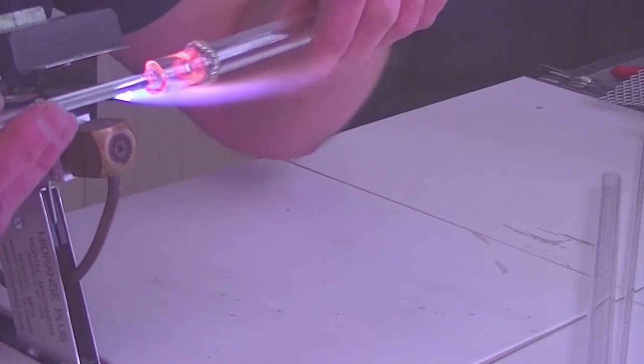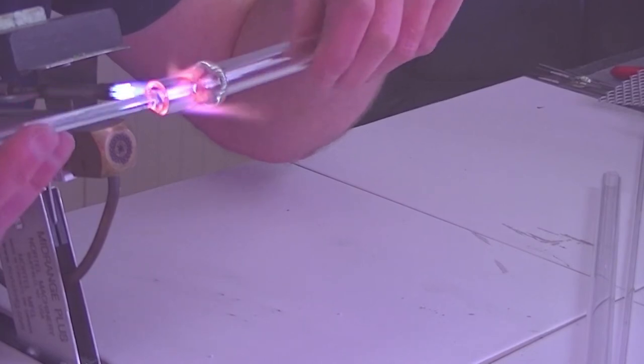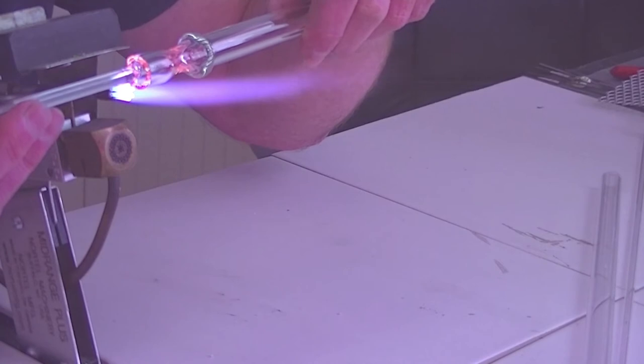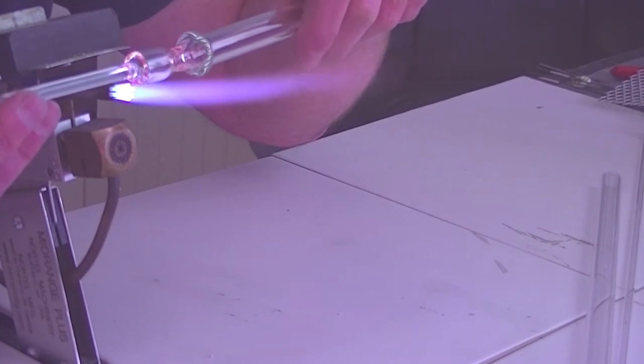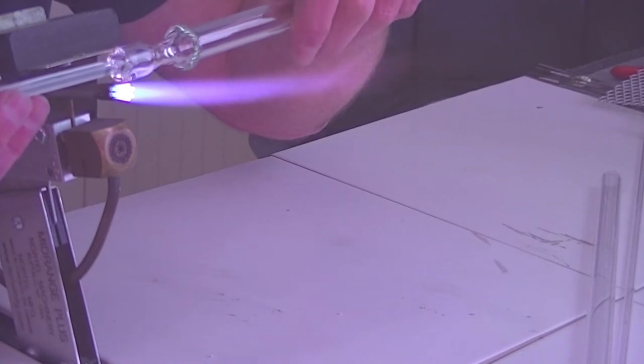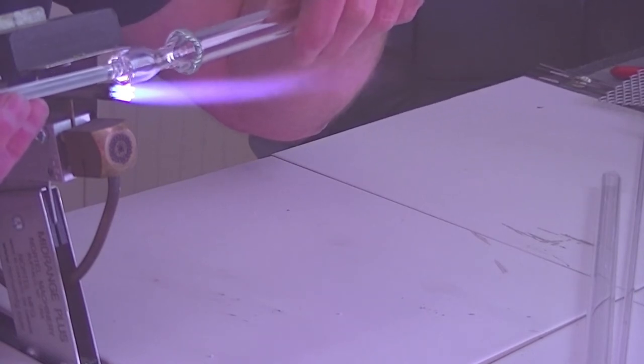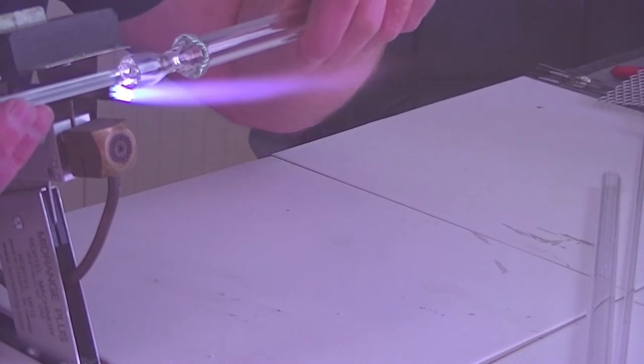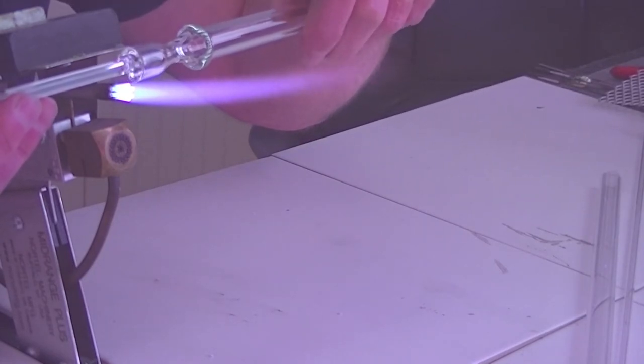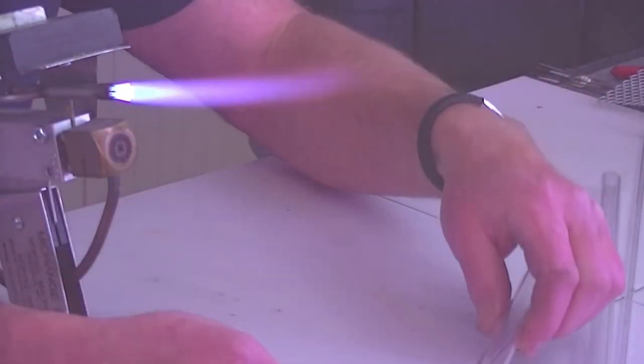So let the glass shrink down on its own, and just neck it down to around about 8 to 10mm diameter, and then out of the flame, just let it cool down, and just pop that down for a couple of seconds.